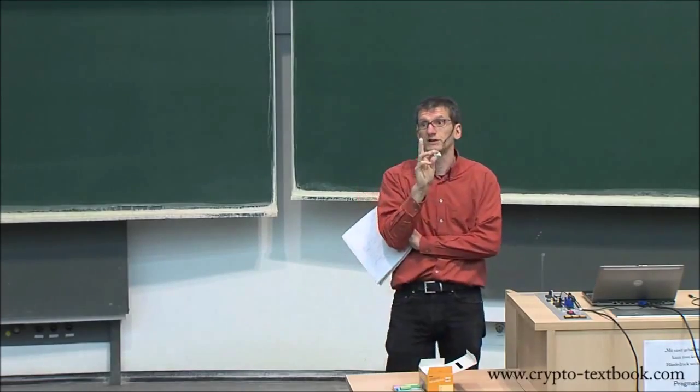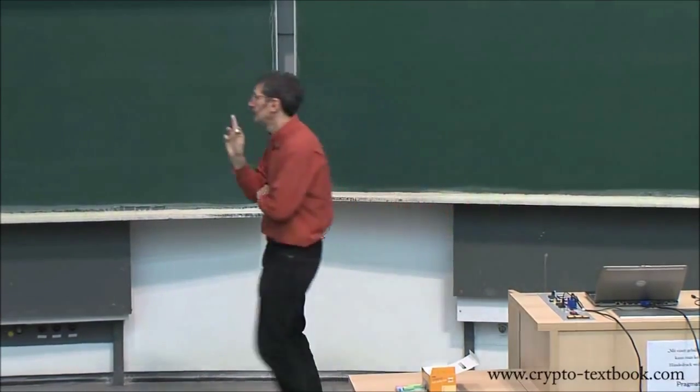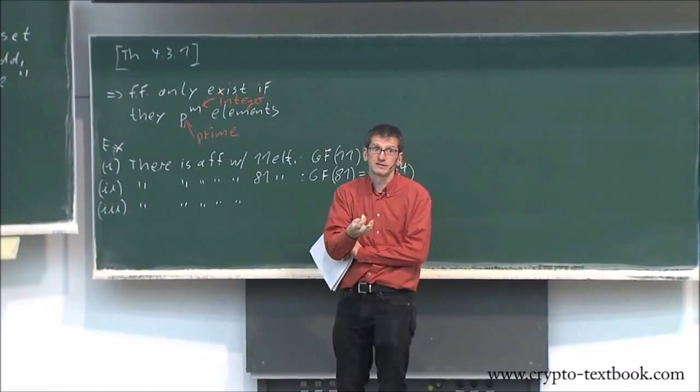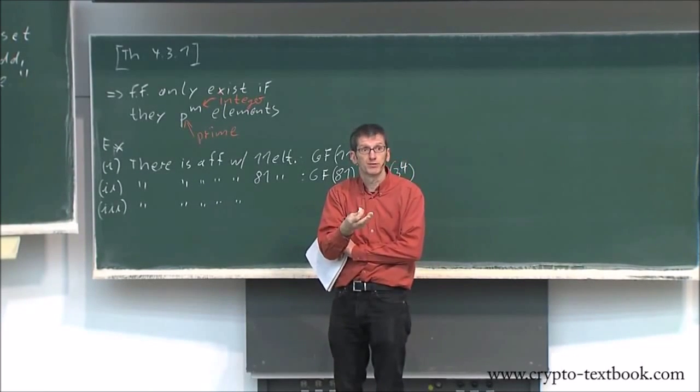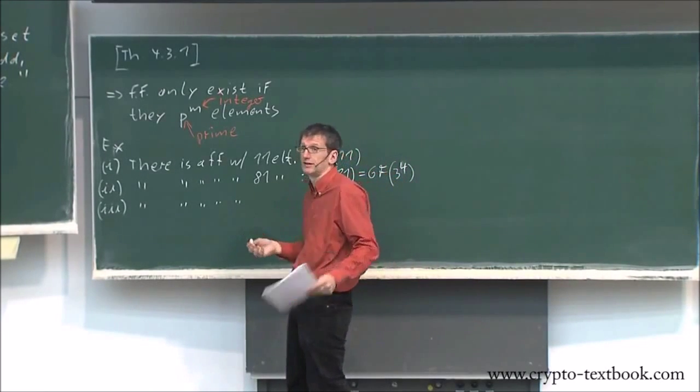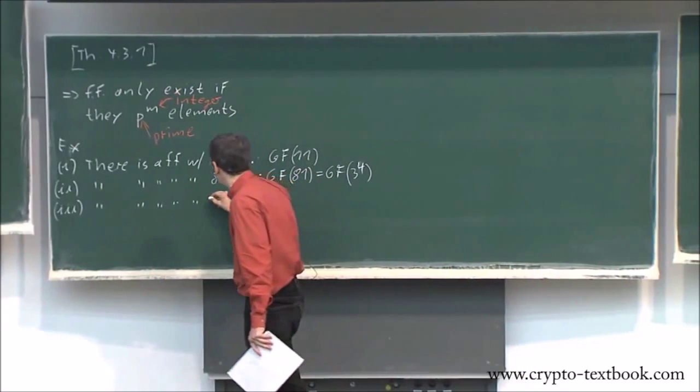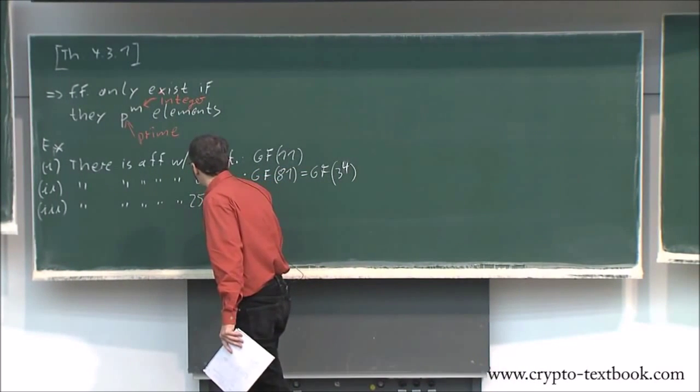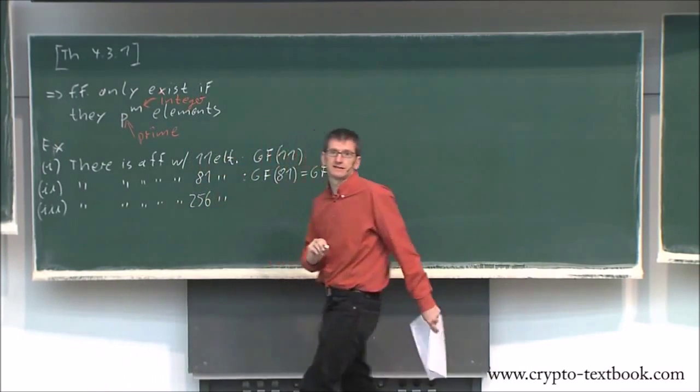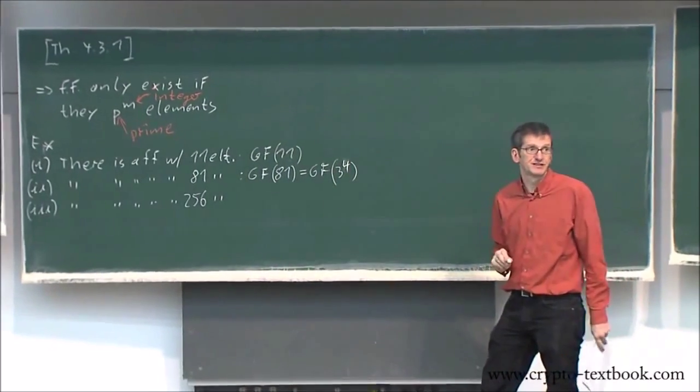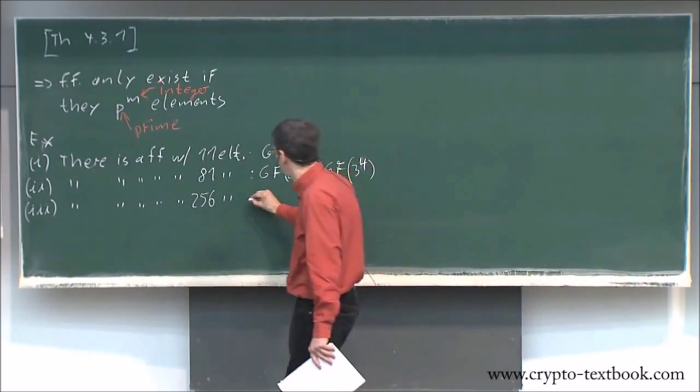The smallest prime number is 2. And it turns out that these are super, super, super important fields in practice, not mathematically speaking.